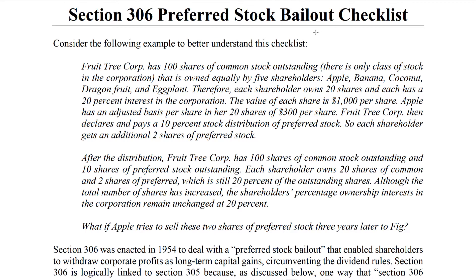Before we go through the actual technical mechanics of the law, consider the following example, which ties to a similar example from the Section 305 corporate stock distribution checklist. Fruit Tree Corporation has 100 shares of common stock outstanding — one class of stock, voting common stock — owned equally by five shareholders: Apple, Banana, Coconut, Dragon Fruit, and Eggplant. Each shareholder owns 20 shares and has a 20% interest in the corporation, calculated as 20 shares over 100 total shares. That's the before percentage.